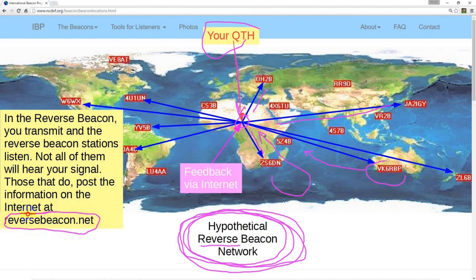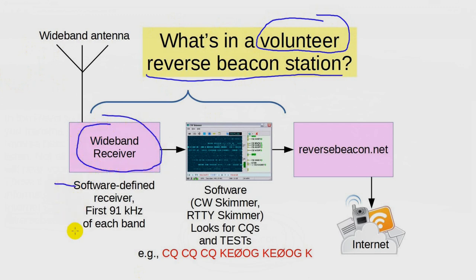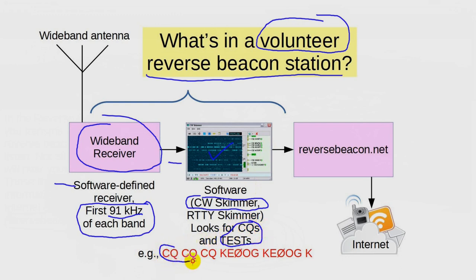Reverse beacon stations are run by volunteers. They each have a wide-band receiver, such as a software defined radio. These radios can often hear the entire CW band all at once, up to 91 kilohertz from the bottom of the band. The output of these receivers is fed into special software called CW Skimmer. This amazing piece of software listens for CQs, or the word 'test', and then the call sign that follows. So if I were to call CQ followed by my call sign, the skimmer software at one or more reverse beacon sites might pick this up, and that information is transmitted over the internet to reversebeacon.net.